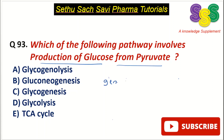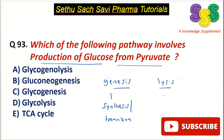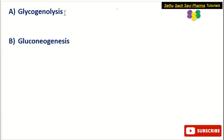Two terminologies you need to know: genesis and lysis. Genesis means the synthesis or formation of a particular compound, whereas lysis means the breakdown of a particular compound to a different compound.